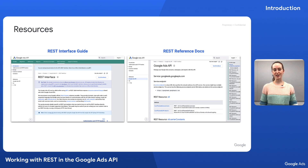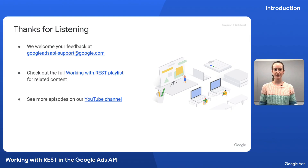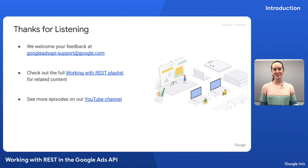That just about covers everything I wanted to discuss as an introduction to working with REST in the Google Ads API. If you want to do a deeper dive into the design of the REST API or the various resources and methods available to you, check out our REST interface guide and reference documentation. We've established a foundation of knowledge for working with REST in the Google Ads API, which I hope gives you the confidence and know-how to get started. Stay tuned for later episodes of the REST series, where we'll walk through examples of accessing the Google Ads API through REST. Thanks for watching.